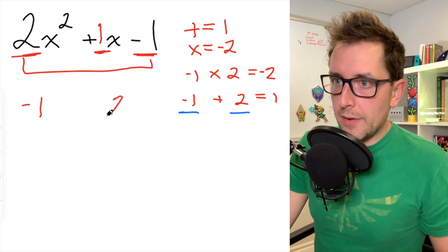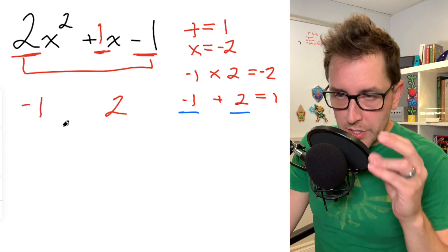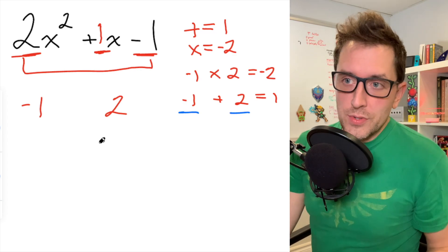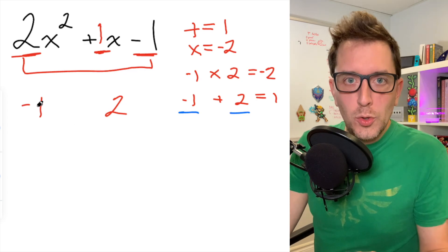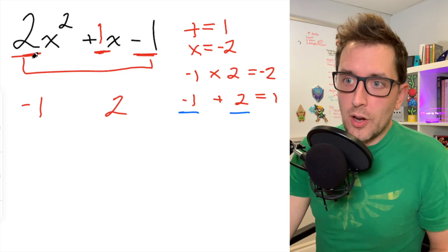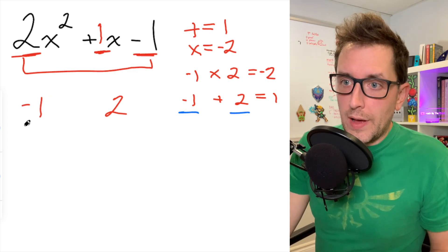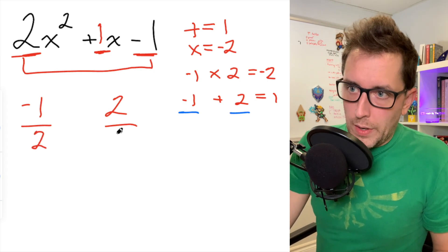Those are the two numbers that we chose. And the strategy that I use randomly divides those two numbers by the value of A. The value of A in our example was 2. So we're going to divide each number that we picked by 2.